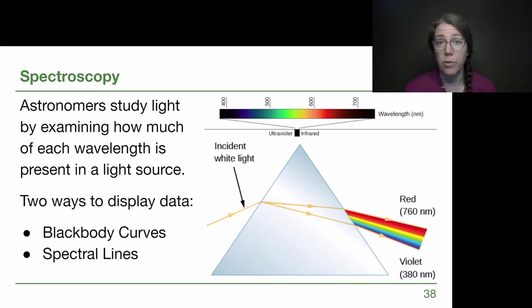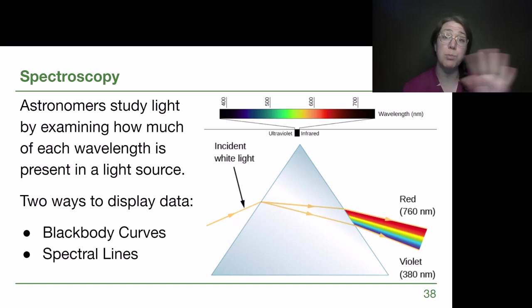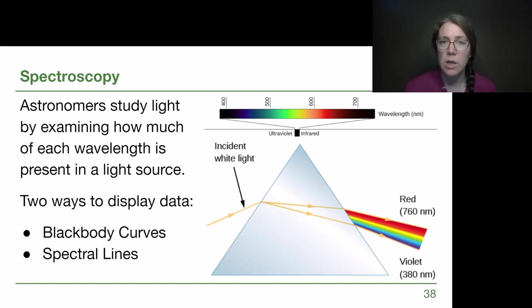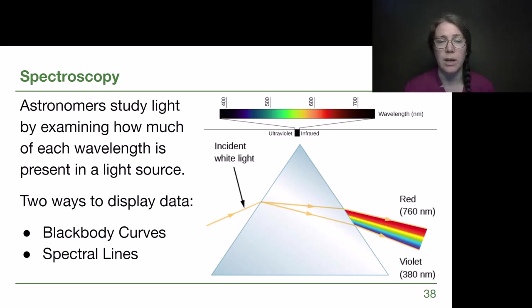When we study the light from an object like a distant star, there are two main ways that astronomers display that data to study it, and we learn different things based on those two different ways. The first we're going to talk about is black body curves — what the curve shape is trying to tell us and the overall pattern that a star creates. Then we're going to talk about spectral lines and the additional information we learn when we figure out what lines are missing from a star's spectrum.